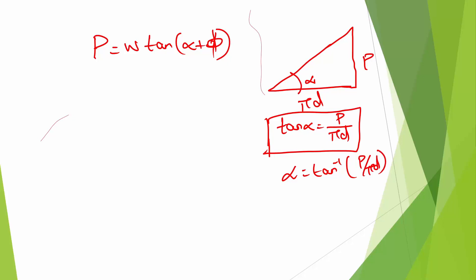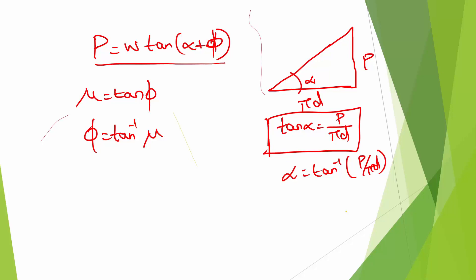The second parameter is φ. The coefficient of friction μ is equal to tan φ, so φ = tan⁻¹(μ). With both α and φ known, the load required P = W·tan(α + φ), which is the formula for lifting a load.